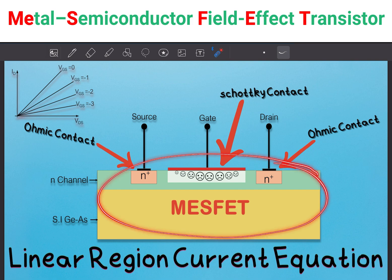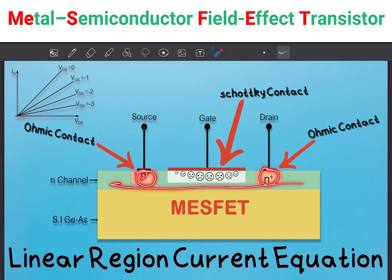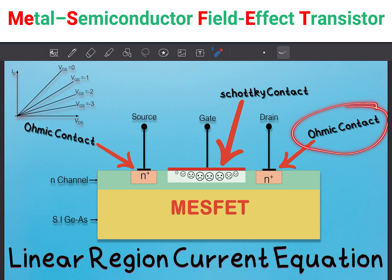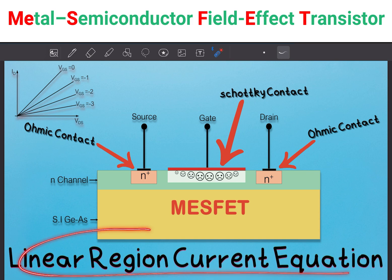In this video I will explain the structure of the MESFET — why we need the n-plus substrate, a heavily doped semiconductor, and how it creates a depletion region. We will also see what is ohmic contact and what is Schottky contact: the drain and source create ohmic contacts, while the gate creates a Schottky contact. Then we will derive the linear region current equation and plot the I_D versus V_DS characteristics.